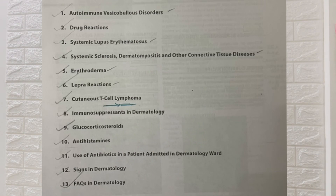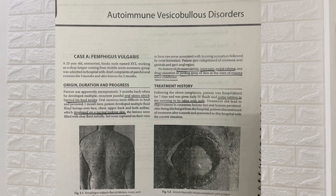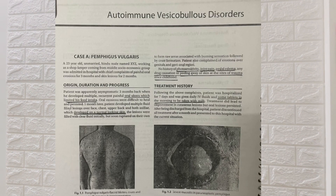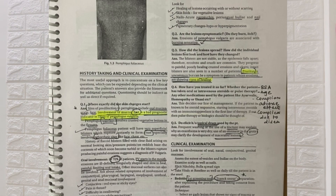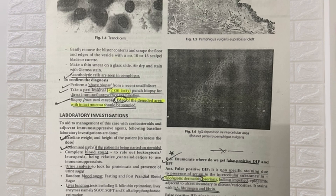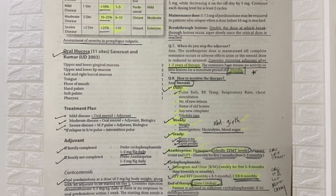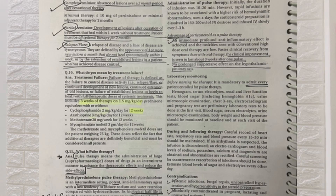Here is the index. The first seven chapters are straightforwardly important long cases, and this is what a chapter looks like — the important history points, things you should not miss on history and examination, the investigations you need to do, other commonly asked questions, and the treatment plan — all of that is covered. So it's a very informative read, and I would recommend reading it in the first year itself.